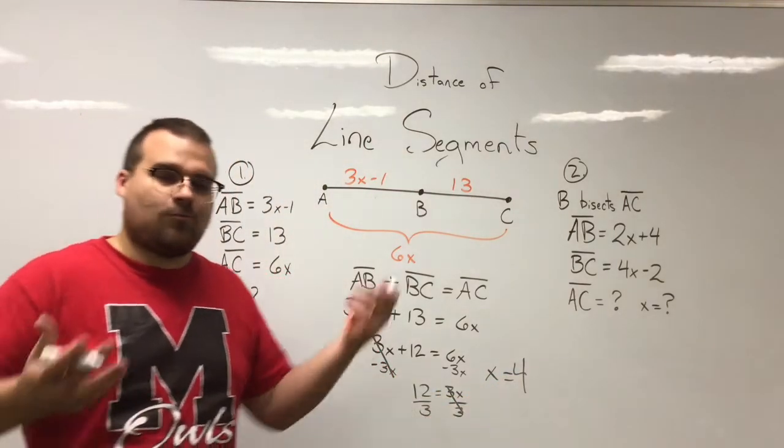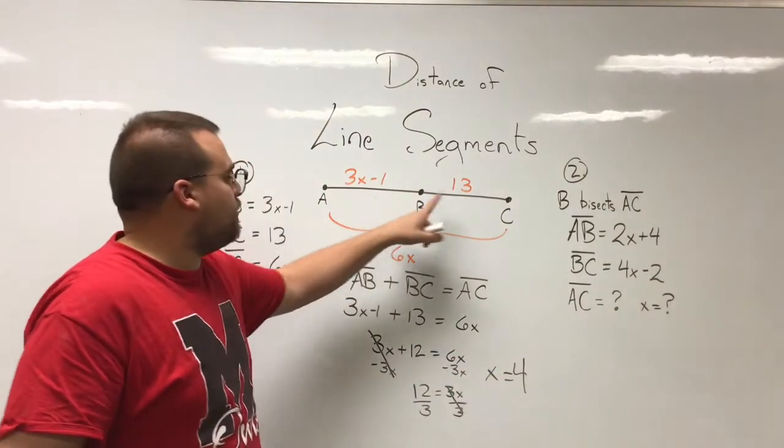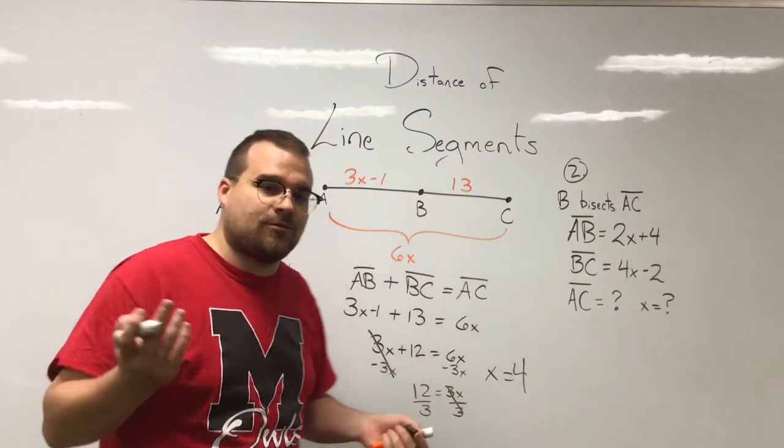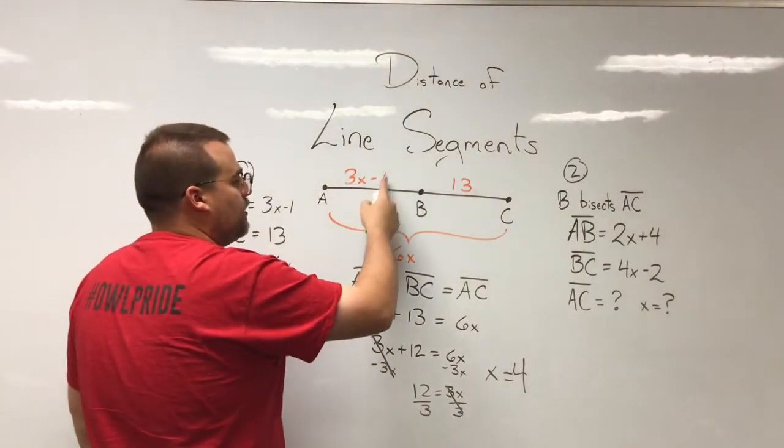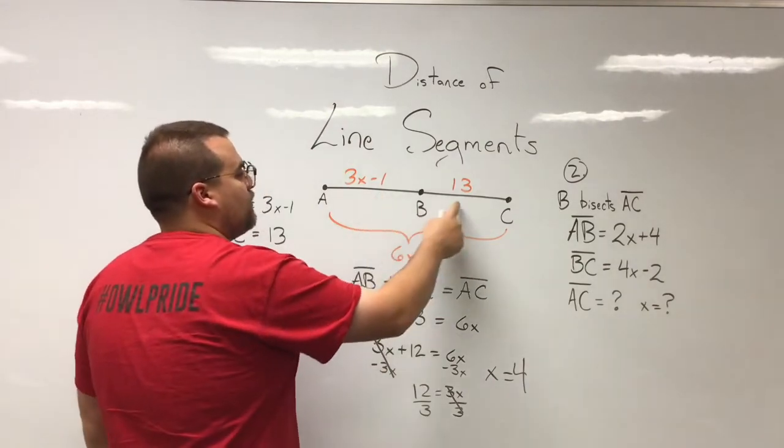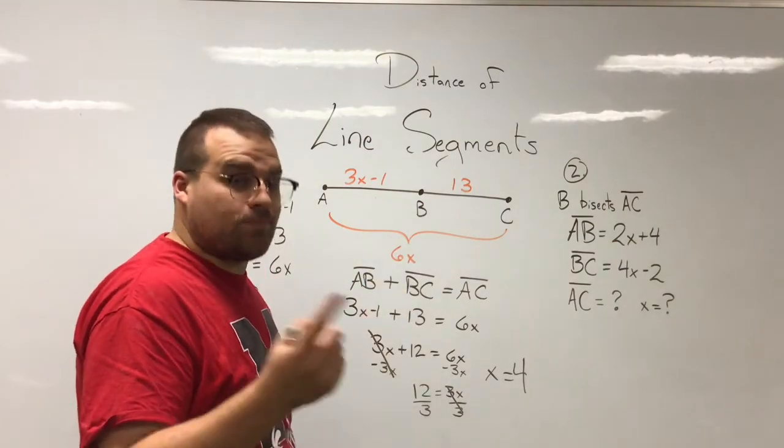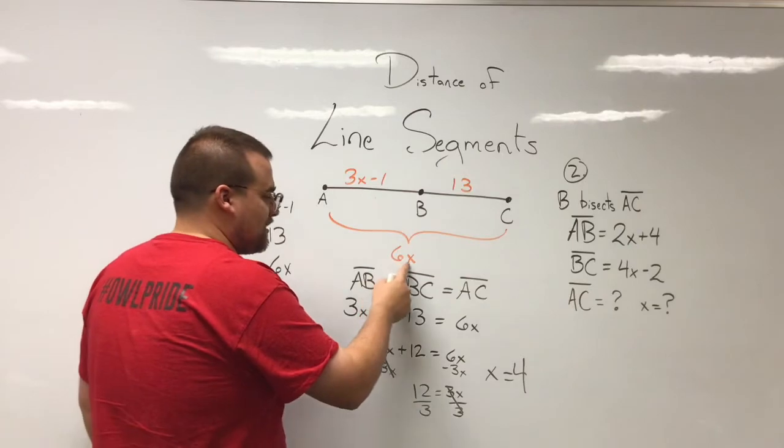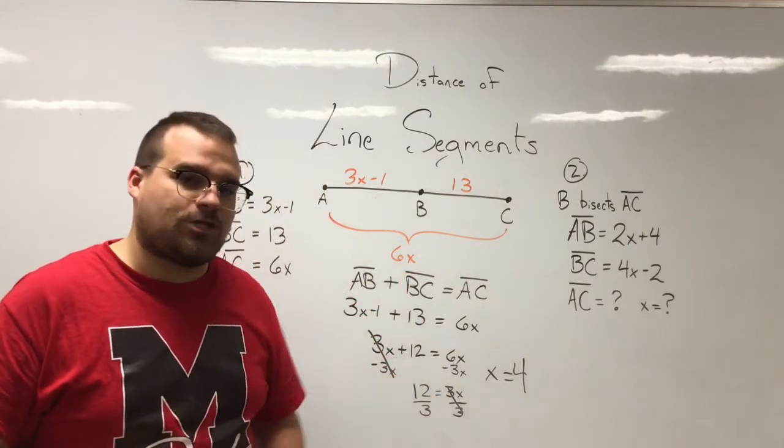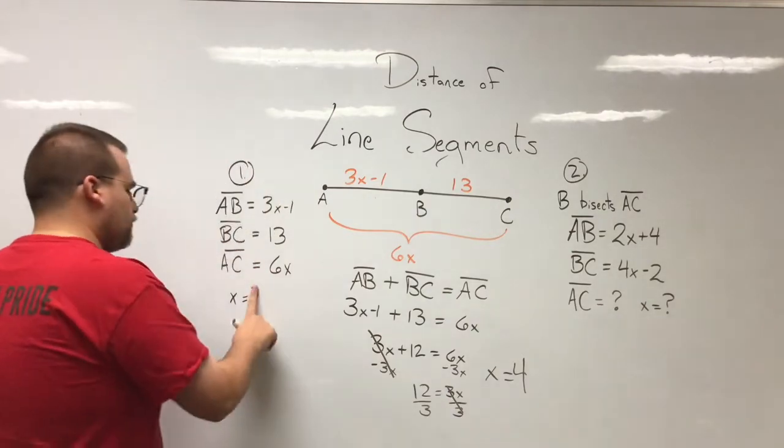Guess what, we just solved it, we're already done. If we wanted to plug that 4 in, we could actually check. We could see how long is the line. 3 times 4 is 12, 12 minus 1 is 11, so this one's 11, that one's 13. Looks like the whole thing must be 24, which makes sense because 6 times x, or 6 times 4, is 24. That's a way that we can check our work on these problems.